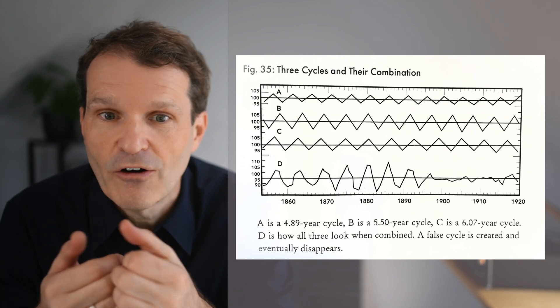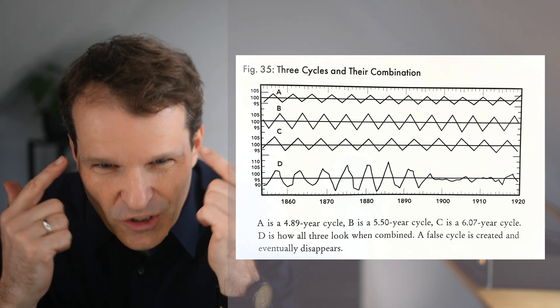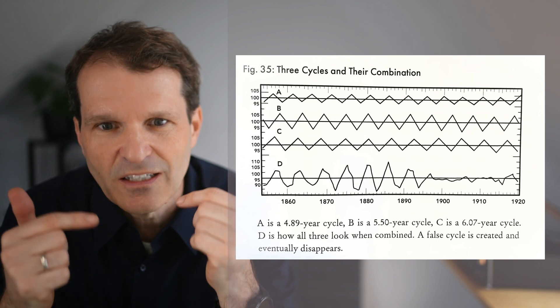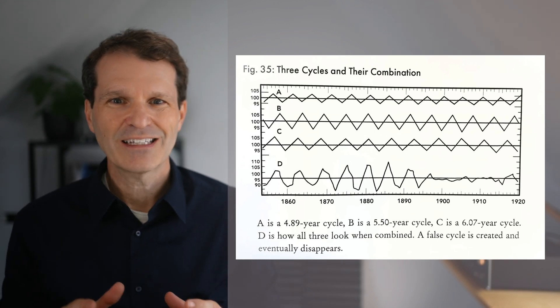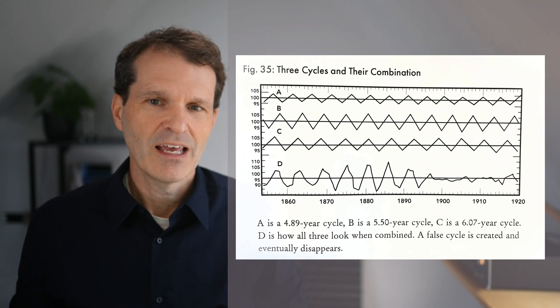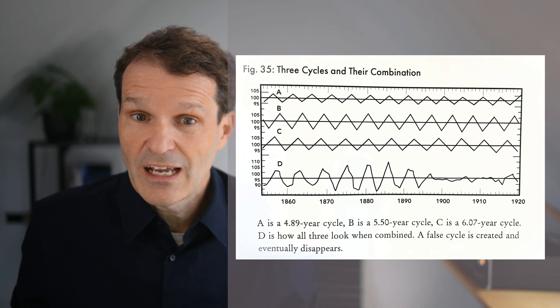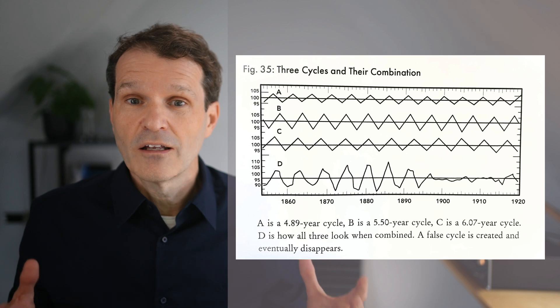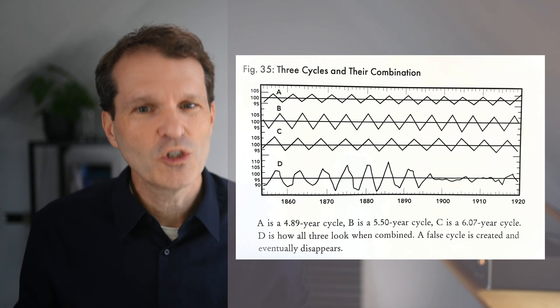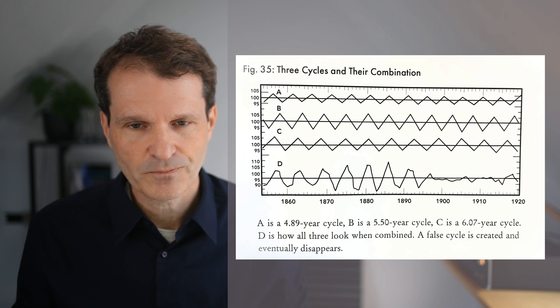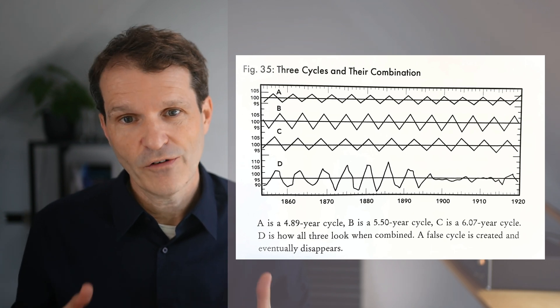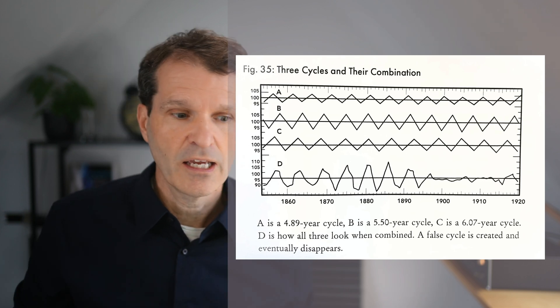If you then try to extrapolate that visual cycle into the future, you will get tricked and you will be completely off with your prediction. You need to be careful not being tricked by visual identification of cycles. Even not using one single cycle—it's more important to use a combination of cycles.